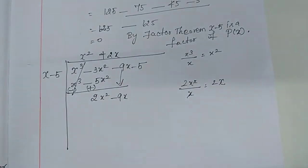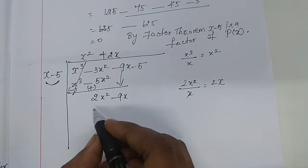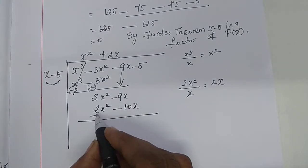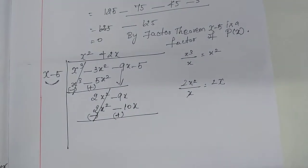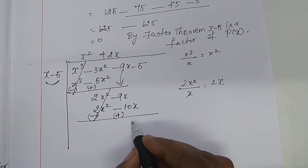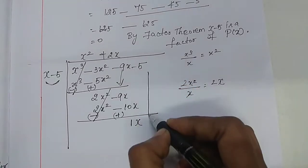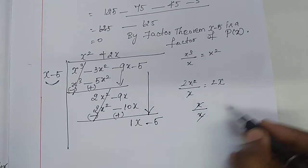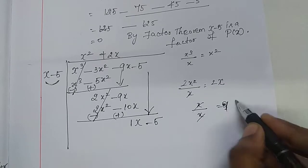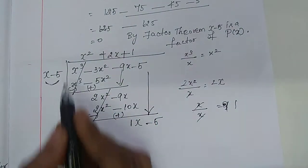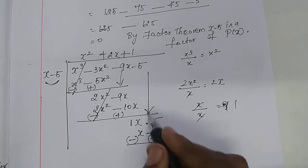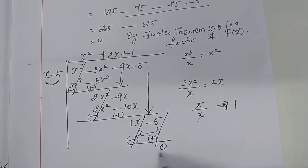Plus 2x. Multiply these two terms with plus 2x: we get 2x square minus 10x. Change the sign — minus here, plus. These two terms get cancelled. We get plus 1x. Bring down the next term minus 5. This x divided by x gives plus 1. Multiply these two terms with plus 1: we get x minus 5. Change the sign — minus, plus. Cancelling. Remainder is 0.